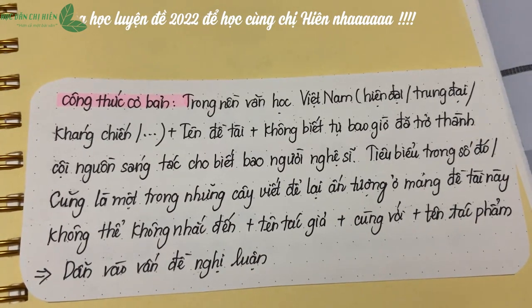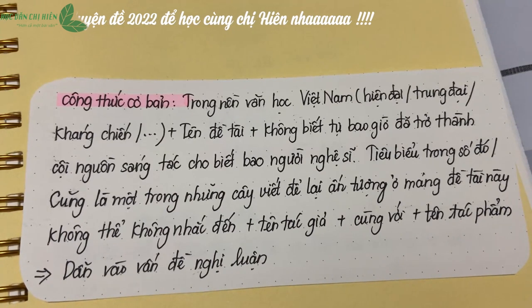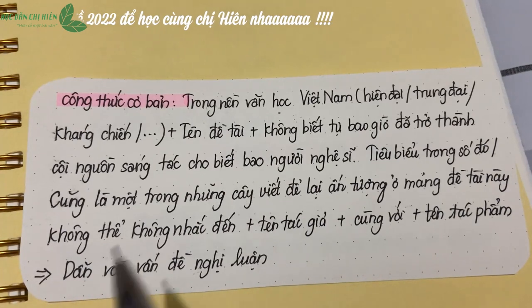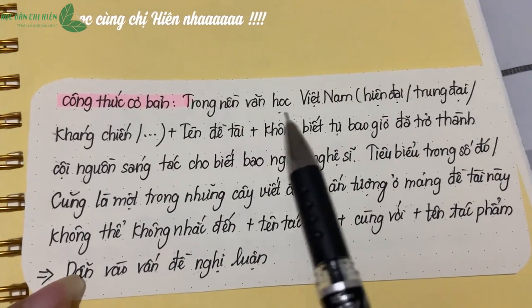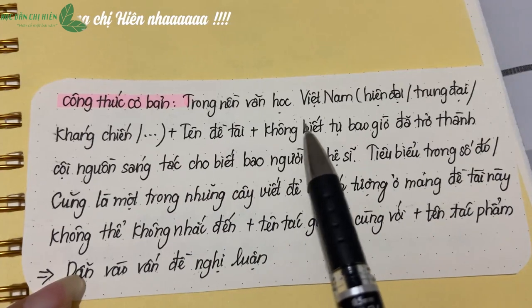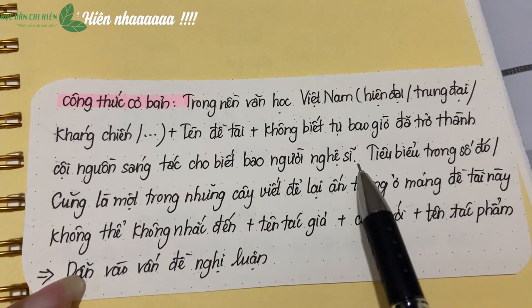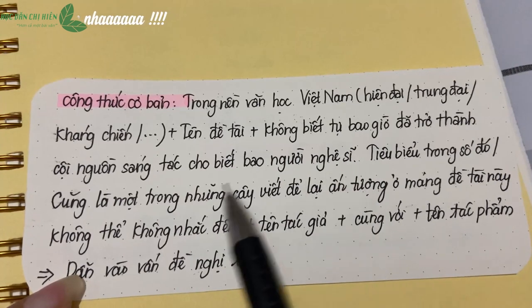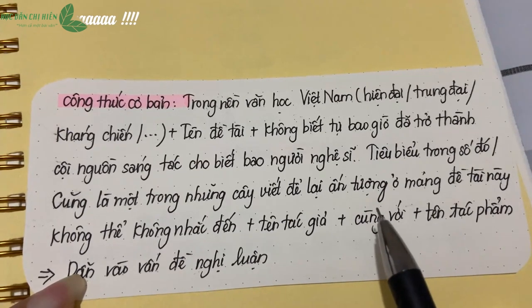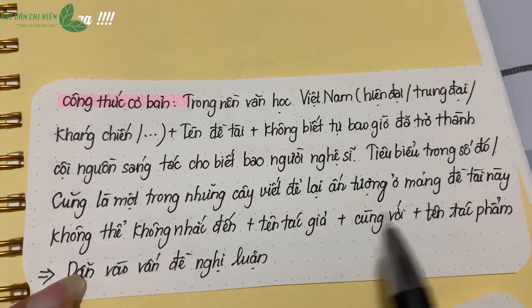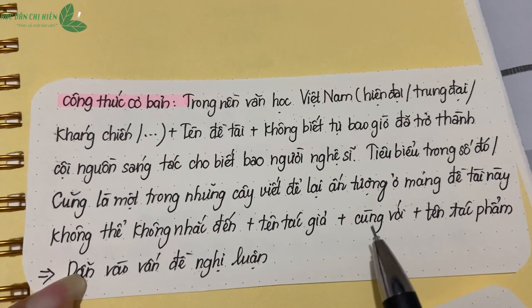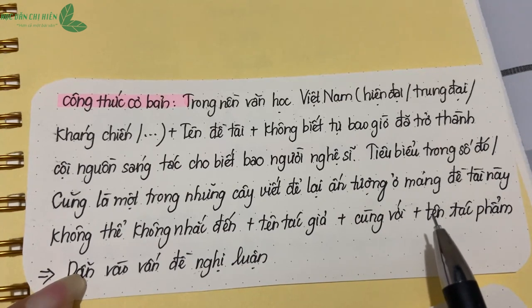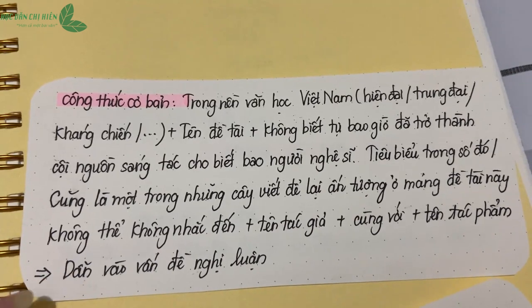Ví dụ một: phân tích 14 câu thơ đầu trong thi phẩm Tây Tiến của nhà thơ Quang Dũng. Trong nền văn học Việt Nam hiện đại, người lính không biết từ bao giờ đã trở thành cội nguồn sáng tác cho biết bao người nghệ sĩ, đặc biệt trong mảng thơ ca kháng chiến. Tiêu biểu trong số đó không thể không nhắc đến nhà thơ Quang Dũng, cùng với thi phẩm đánh dấu tên tuổi của ông - bài thơ Tây Tiến. Bài thơ đã để lại ấn tượng sâu đậm về hình ảnh người lính Tây Tiến, đặc biệt qua 14 câu thơ đầu với những hành trình gian khổ trong khung cảnh thiên nhiên miền Tây. Rất đơn giản, các bạn hoàn toàn có thể áp dụng ngay.